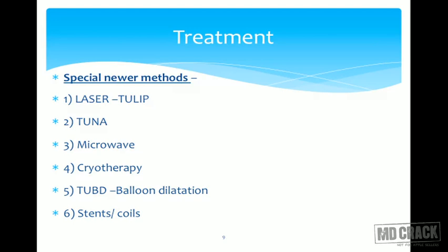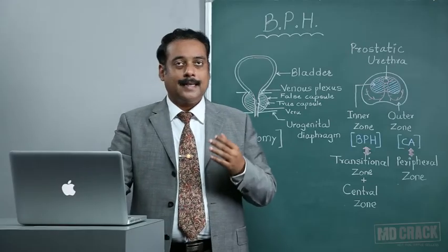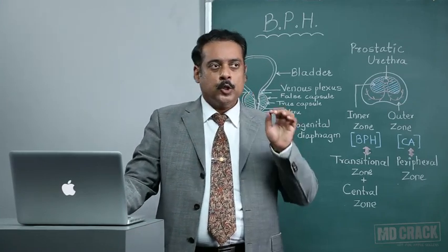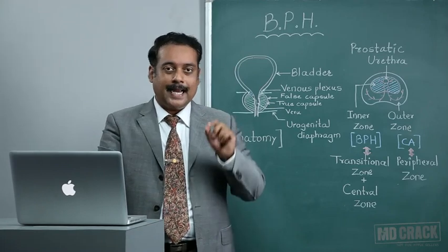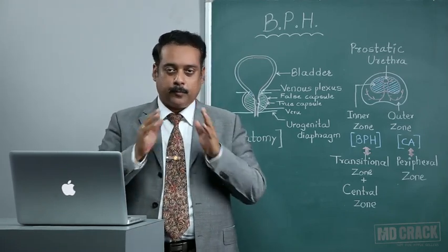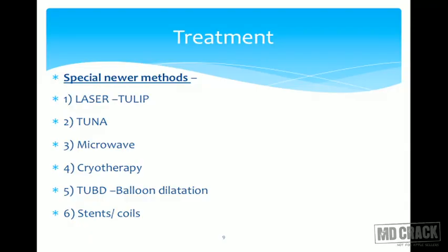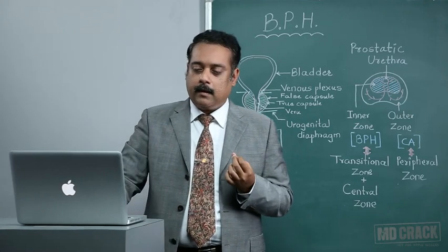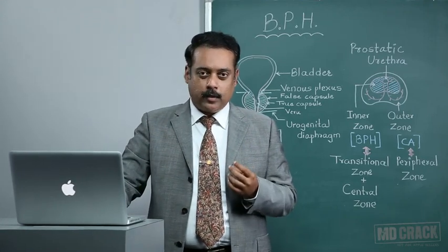Second is transurethral needle ablation, or TUNA. Here the gland is enlarged but not so much as to cause severe obstructive symptoms. Various needle ablations are performed at multiple points to evaporate zones, opening up the urethra. Third is microwave energy, which is used to ablate the enlarged prostate gland. Previously, a few people advocated cryotherapy, but it is not a popular modality of treatment.